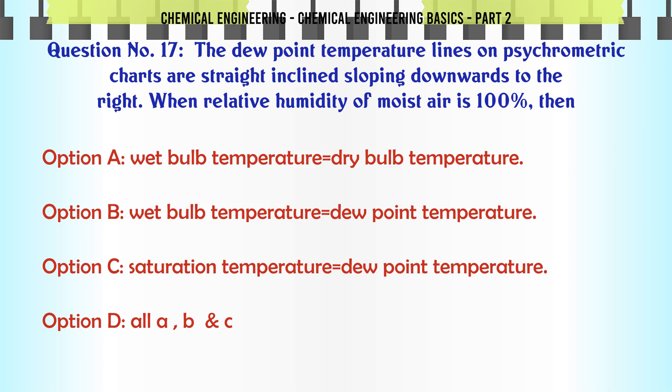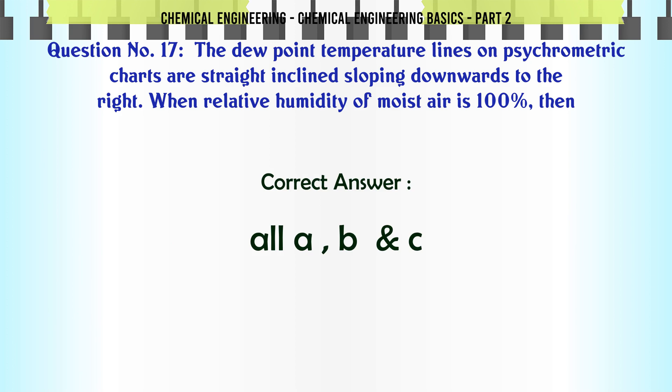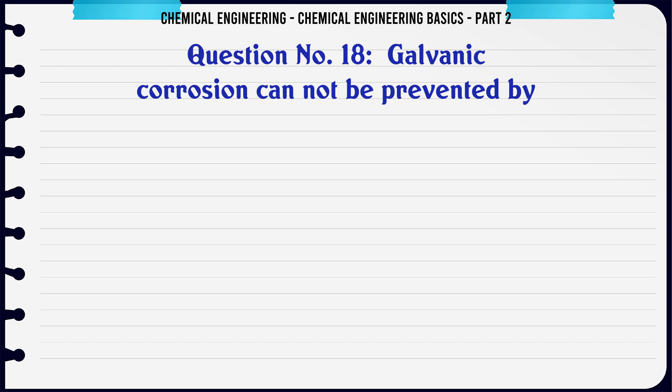When relative humidity of moist air is 100%, then: a) wet bulb temperature equals dry bulb temperature, b) wet bulb temperature equals dew point temperature, c) saturation temperature equals dew point temperature, d) all of a, b, and c. The correct answer is: all of a, b, and c.